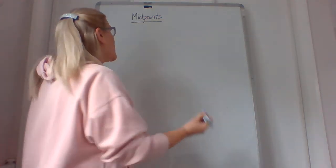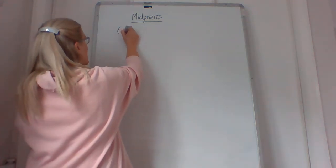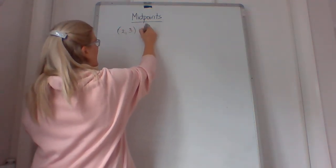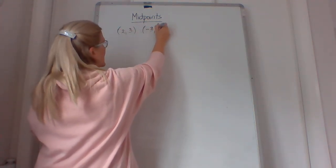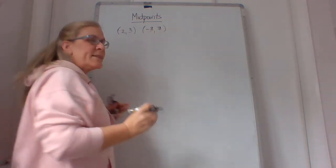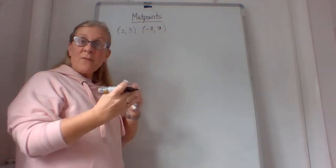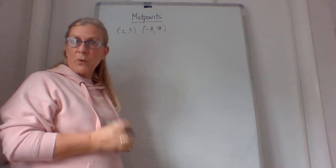So if we're given two coordinates, let's say (2, 3), and (-3, 7), these two points on a graph have a point that's halfway between them, and that's the point we're looking for.